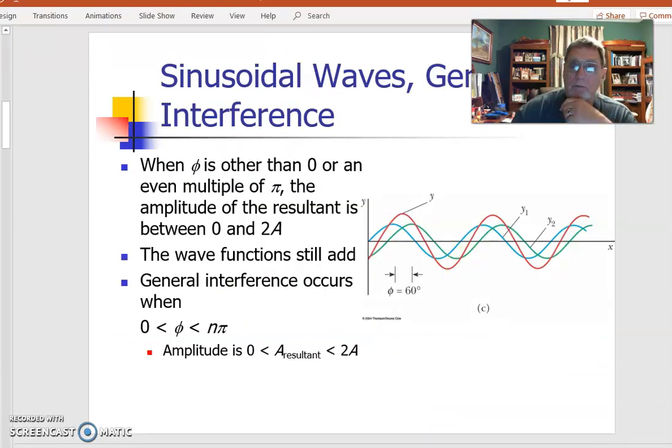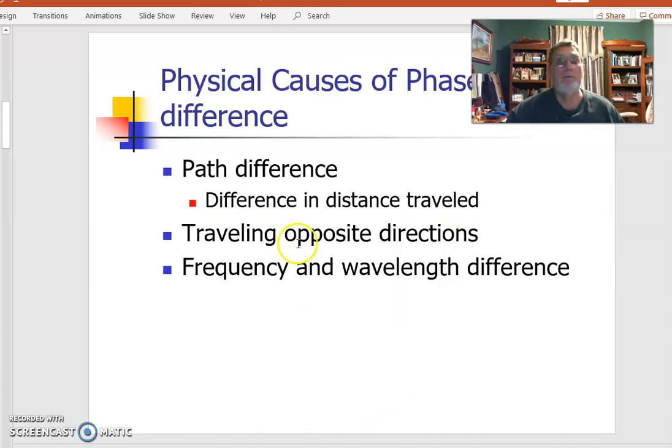There's a number of different ways that we'll talk about in the next several slides on how to have two waves have a phase difference that can meet constructive or destructive interference: path difference, traveling in opposite directions, or traveling in the same direction but slightly different frequency and wavelengths.